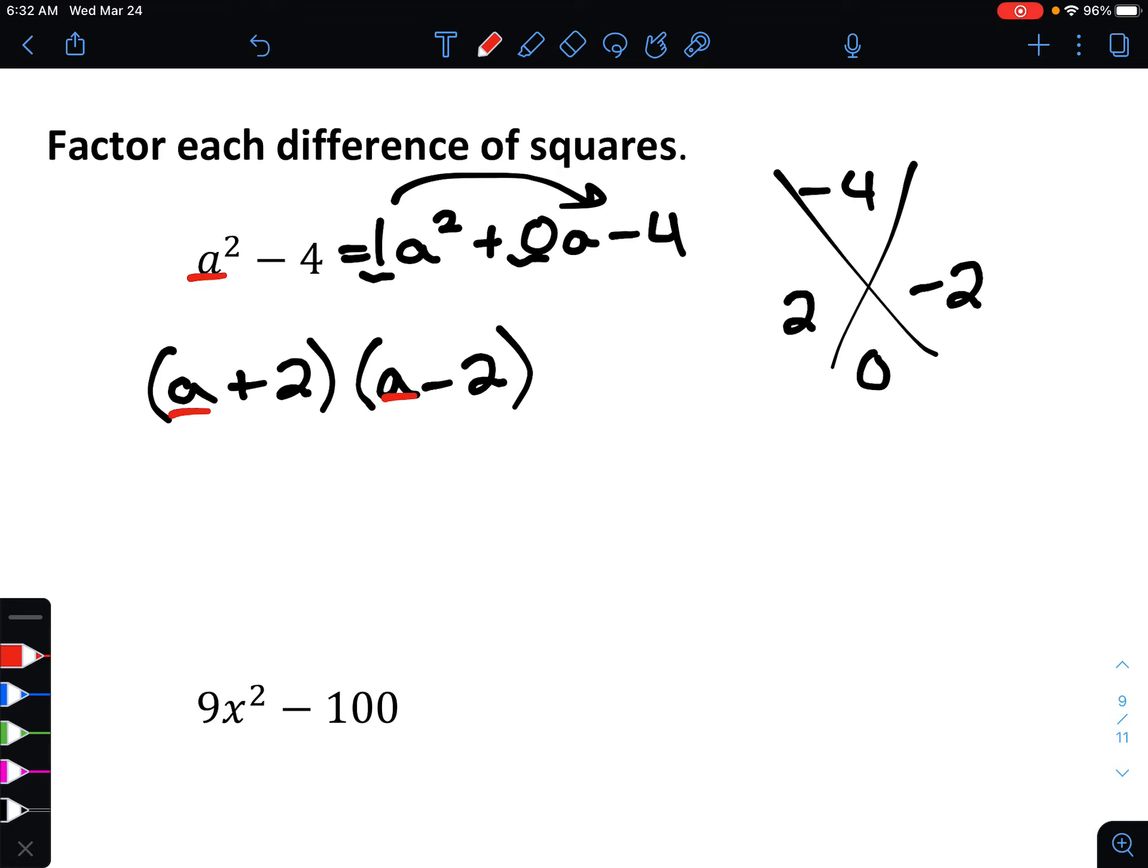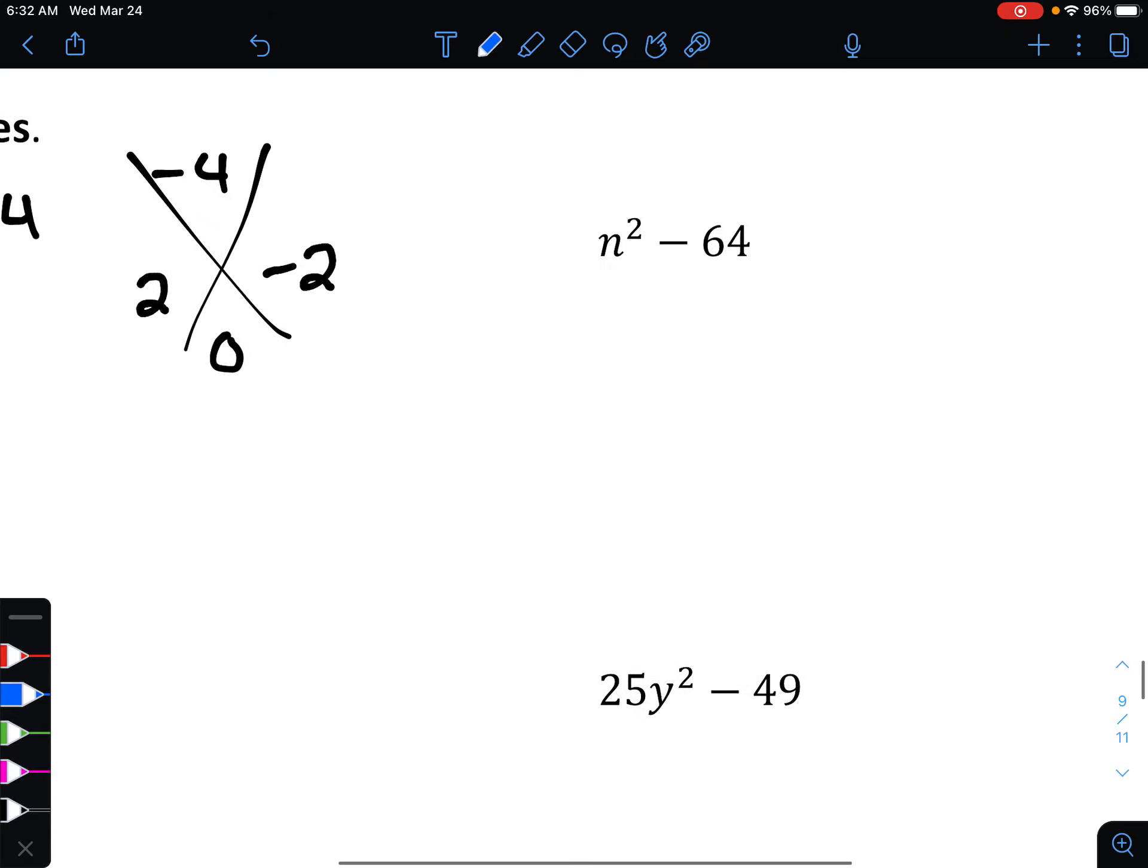The easier thing to do is to think about what is being squared to give you a squared, and that's a. What is being squared to give you 4, and that's 2. And then we just make sure that one of those is a plus, the other is a minus, and that can make the factoring go quite a bit quicker.